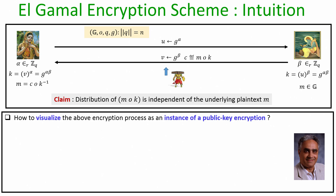I have retained the blueprint of the encryption scheme discussed on the last slide. The question is how we can visualize the entire process as an instantiation of a public key encryption scheme. As per the syntax of public key encryption, we need a key generation algorithm outputting a public key–secret key pair, an encryption algorithm, and a decryption algorithm. This process of visualizing the above encryption process as an instance of public key encryption was identified by Tahir ElGamal, which is why it is called the ElGamal encryption scheme.